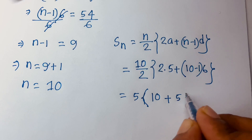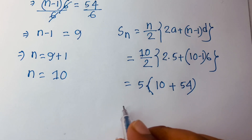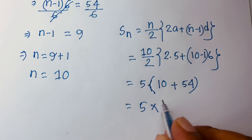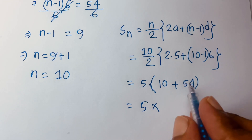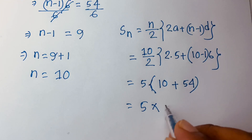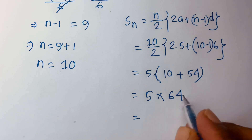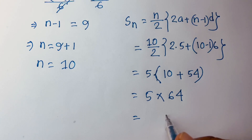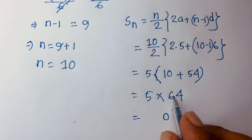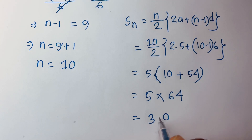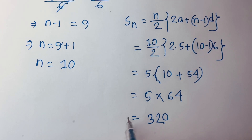So we have 5 times 64, which equals 5 times 10 plus 5 times 54. Breaking it down: 5 times 60 is 300, and 5 times 4 is 20, giving 320. Our final answer is 320.